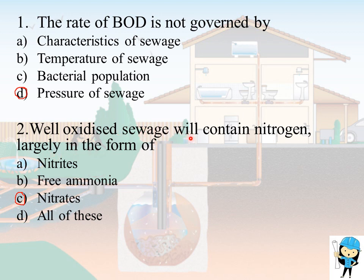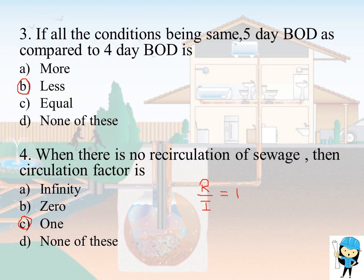Well oxidized sewage will contain nitrogen largely in the form of nitrates. If all conditions are the same, 5-day BOD as compared to 4-day BOD is less, because by the 4th day most of the organic matter will be oxidized, so the 5th day BOD will be comparatively lower than the 4-day BOD.